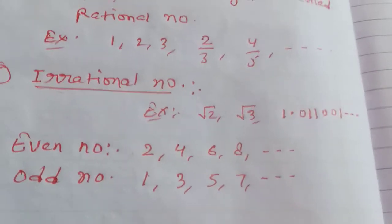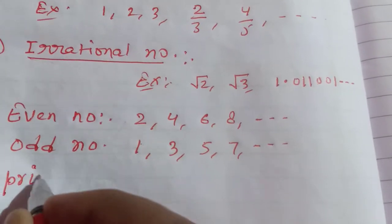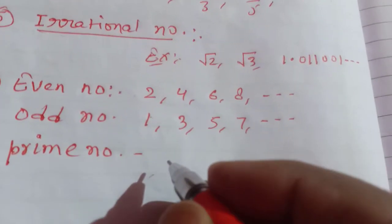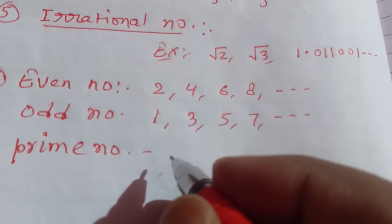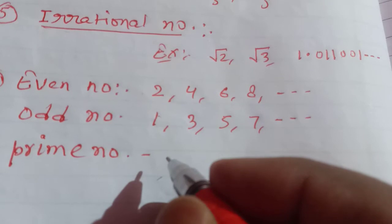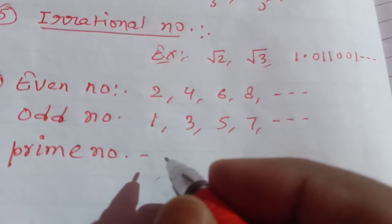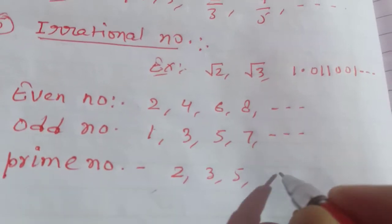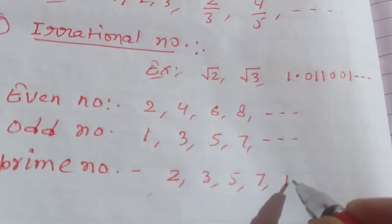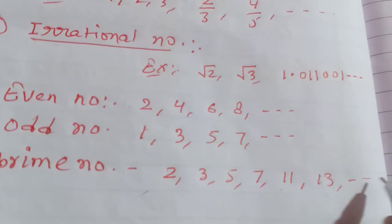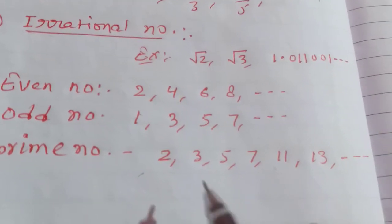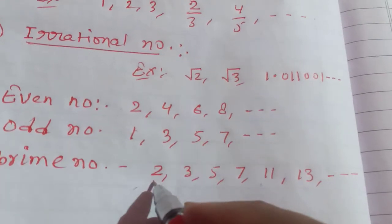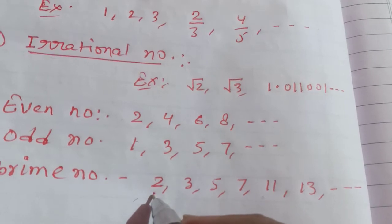Prime number: what do we mean by prime number? A prime number is the number which is divisible by itself and 1 only. It means the number which has only two factors — 1 and itself. For example, 2, 3, 5, 7, 11, and 13 are prime numbers. Here, 2 is the smallest prime number and it is also the only even prime number.